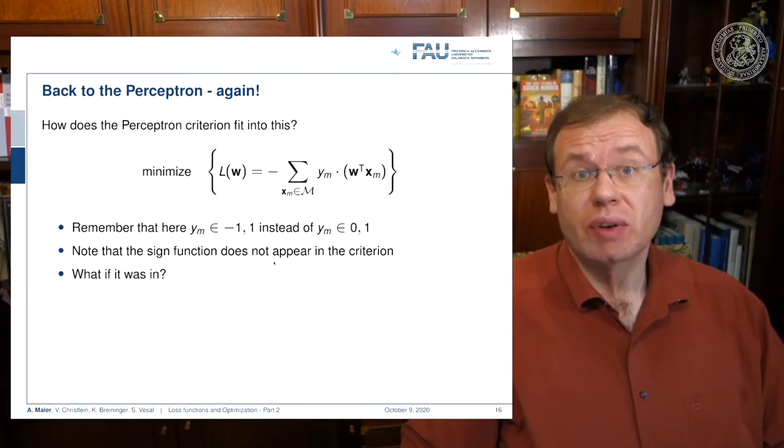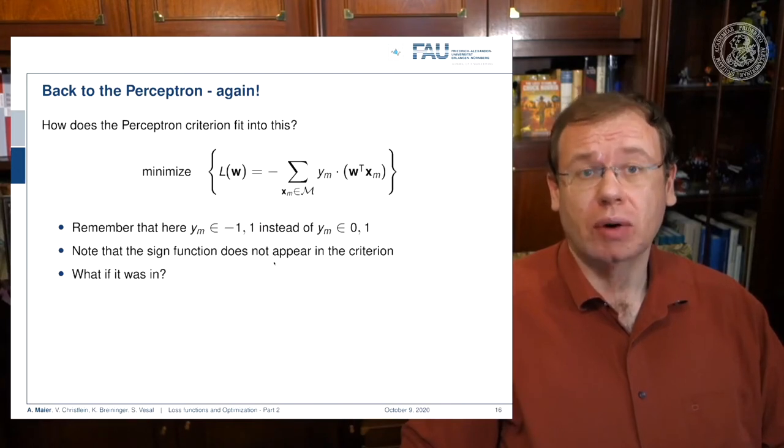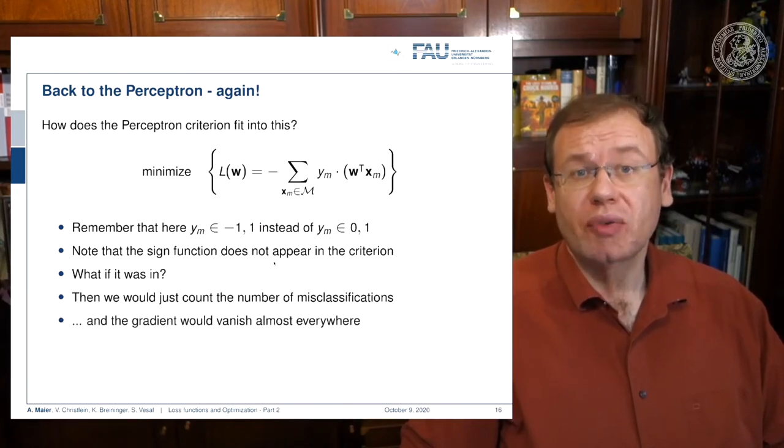Now if it were in, we would run into problems because this would count only the number of misclassifications and we would not differentiate whether it's far away from the decision boundary or close. We could simply end up with a count. If we look at the gradient, it would essentially vanish everywhere. So it's not an easy optimization problem.